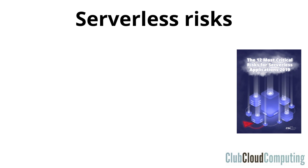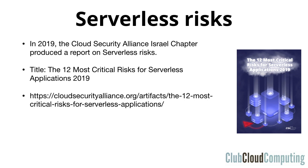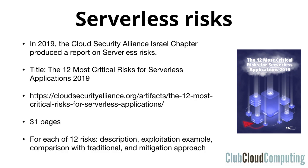Now what about serverless risks? Because every new technology has new risks. The title of the report that the CSA chapter produced is 'The 12 Most Critical Risks for Serverless Applications 2019,' which promises a new version in 2020. Here's the URL but you can probably Google that easily. It's a mid-sized document and for each of those 12 risks it describes the risk, gives an example of how to exploit it, compares the serverless approach in relation to a more traditional application architecture, and then explains how to mitigate that particular risk — typically a number of approaches.